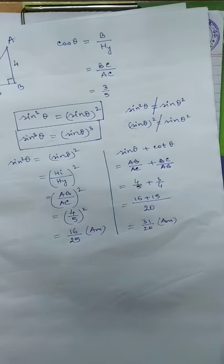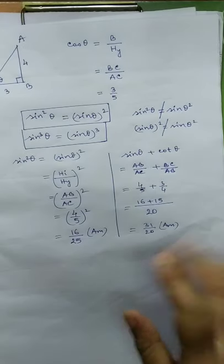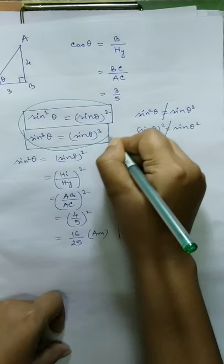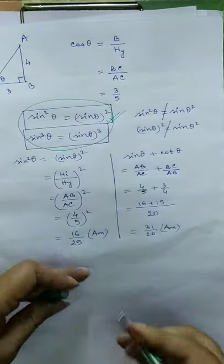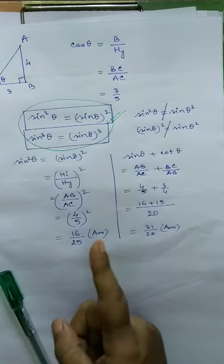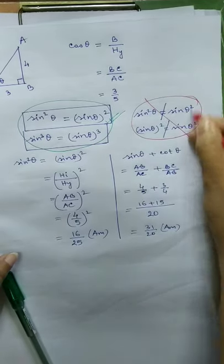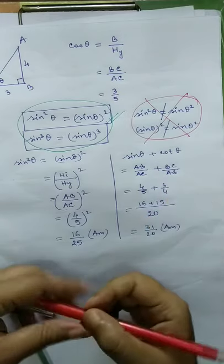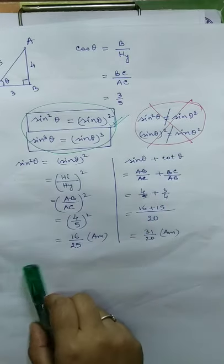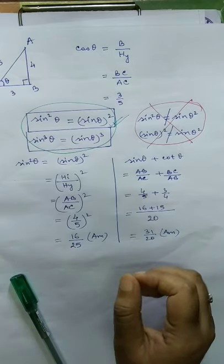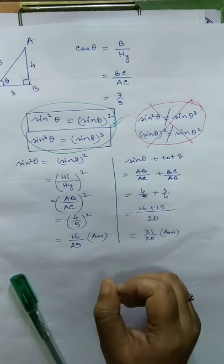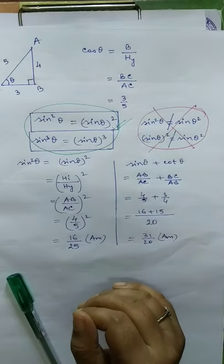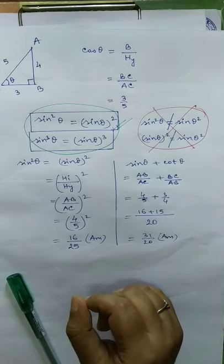So what we learned after doing one problem: remember that sin squared theta equals (sin theta) whole squared — this is the green signal, you must remember this. The notation sin(theta squared) is not equal to that — this is the red signal, do not use it. That is all for today. Worksheets will be attached to this video or in the school app. Thank you class.